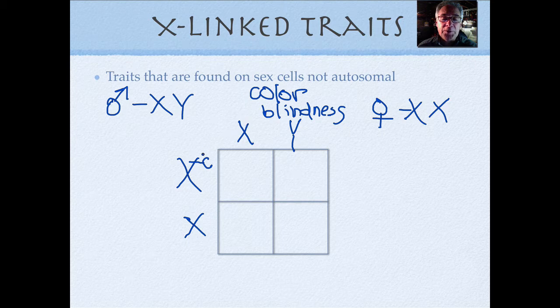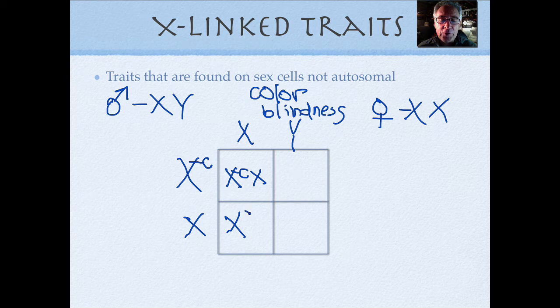So for instance, if this sperm cell fertilizes this egg, we're going to get X with a big C and a regular X. And over here we have two big Xs.